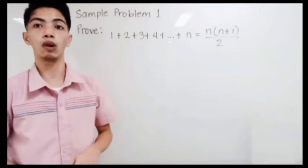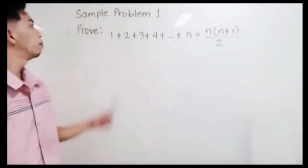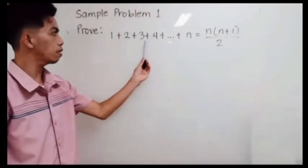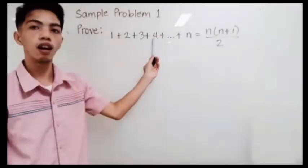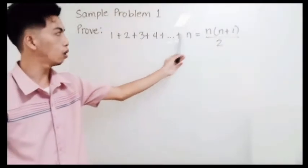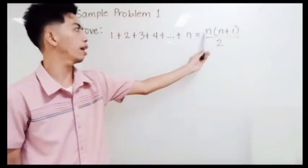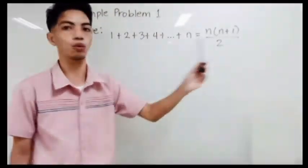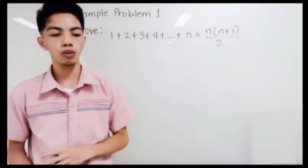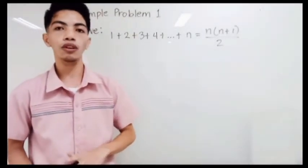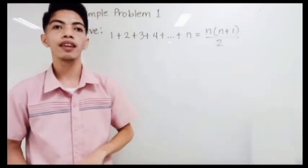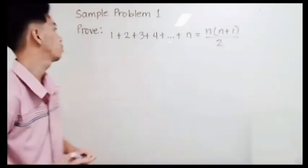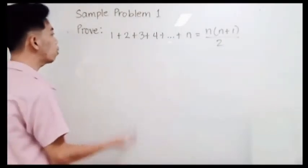Sample problem number 1: Prove that 1 plus 2 plus 3 plus 4 plus all the way to n is equal to n times n plus 1 all over 2. The first step that we need to do is to assume that this is true for n equals 1.